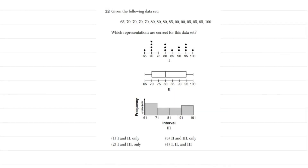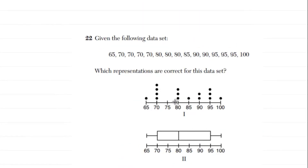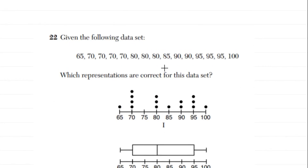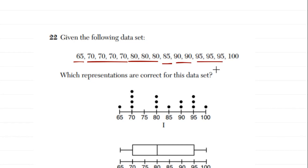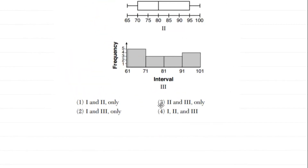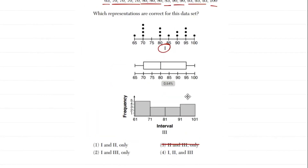Number 22 asks which representations are correct for the given data set. They give us the data points already in ascending order. For the dot plot, make sure you count carefully — there's one 65, four 70s, three 80s, one 85, two 90s, three 95s, and one 100. So numeral one is correct, and any answer choice not including numeral one can be eliminated — that rules out choice three.